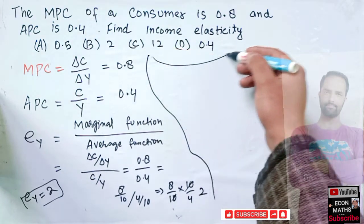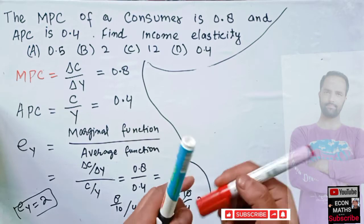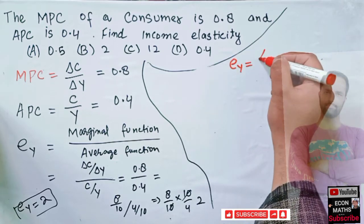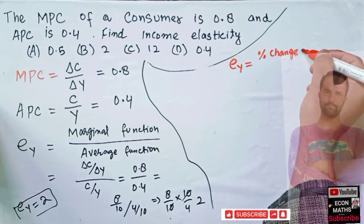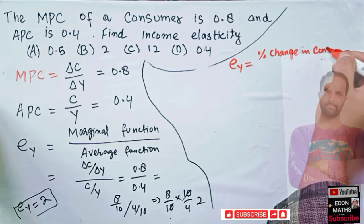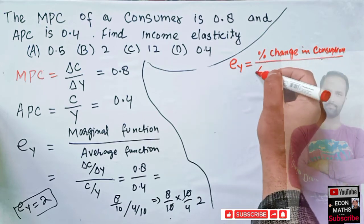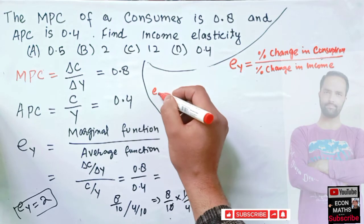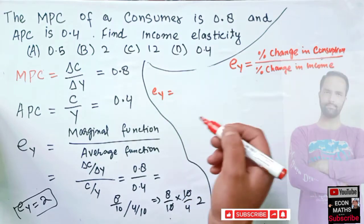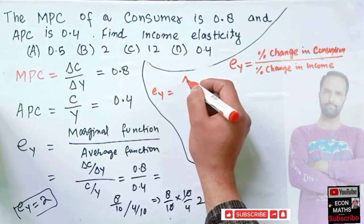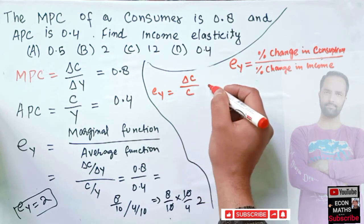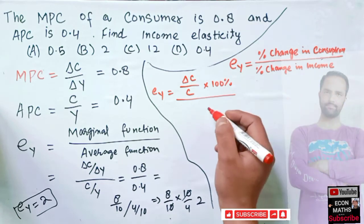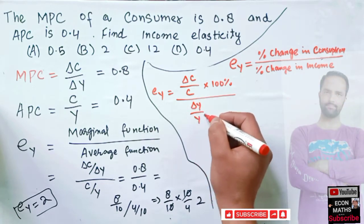We can also solve it using the conventional elasticity formula: income elasticity equals percentage change in consumption upon percentage change in income. Percentage change in consumption means change in consumption upon initial consumption multiplied by 100%, and percentage change in income means change in income upon initial income multiplied by 100%.